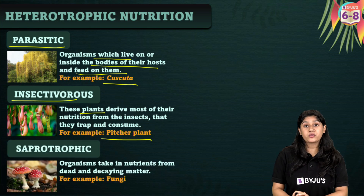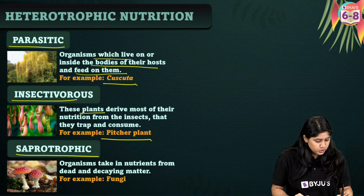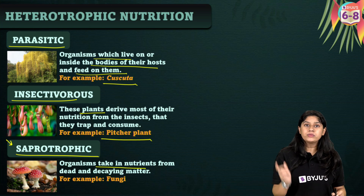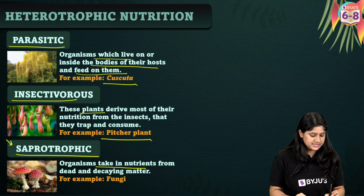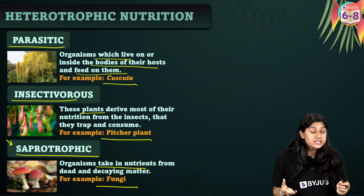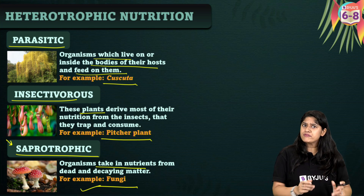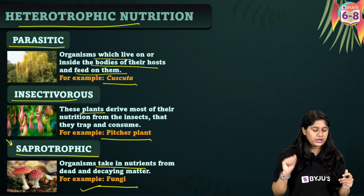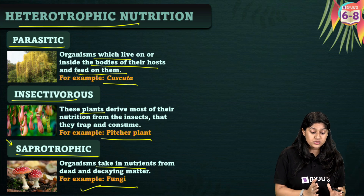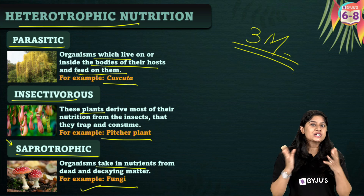The third type is saprotrophic nutrition, where organisms take nutrition from dead and decaying matter. A famous example is fungi, which derives nutrition from dead plants and other organisms. So the three types of heterotrophic nutrition in plants are: parasitic, insectivorous, and saprotrophic. Individually these can come for one or two marks, and together they can come for three marks — very important from the exam point of view.